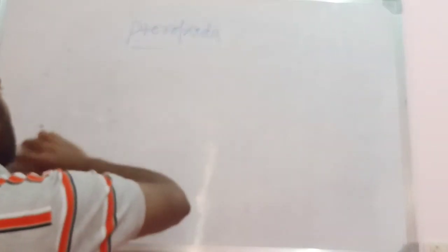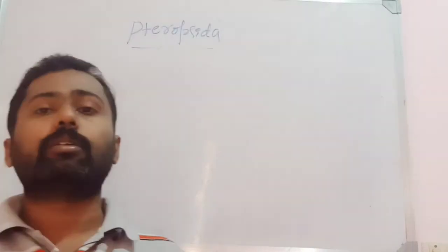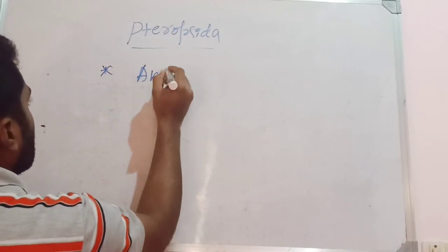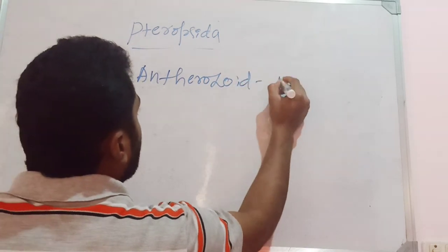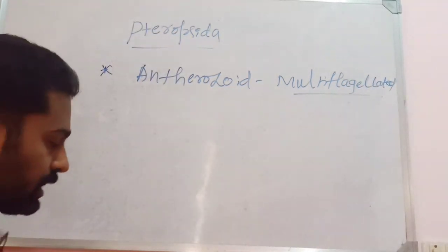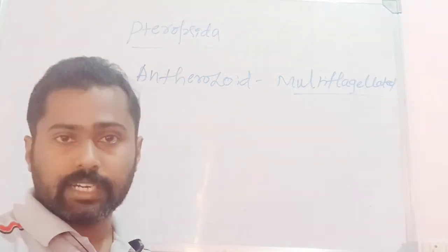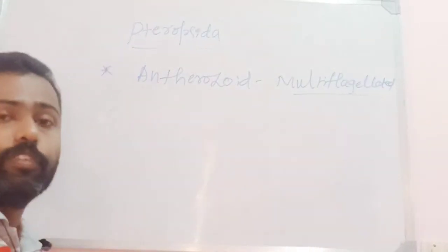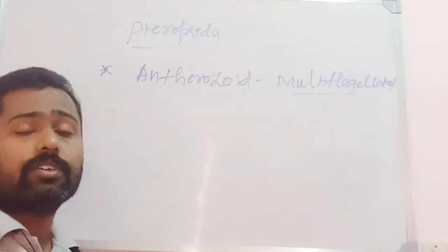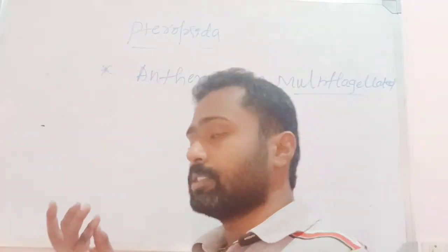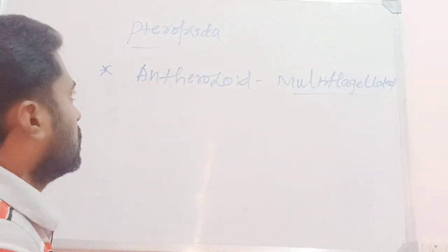In heterosporous Pteropsida, microspores produce male gametophytes and megaspores produce female gametophytes. The anthrozoids (male gametes) in these members are multiflagellated in nature, unlike other groups where they are biflagellated. Anthrozoids fuse with the egg to form a zygote, which develops into an embryo and then the sporophytic plant body. So the four groups of pteridophytes are: Psilotopsida, Lycopsida, Sphenopsida, and Pteropsida.